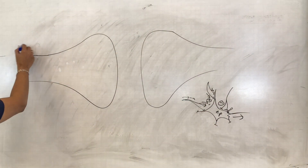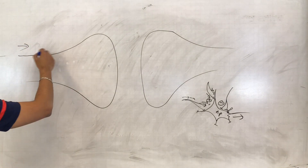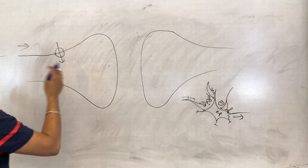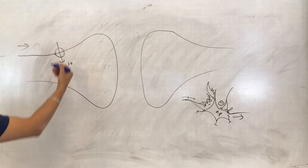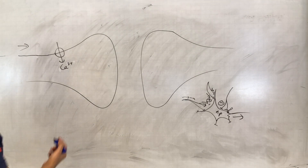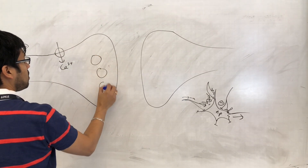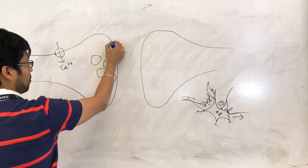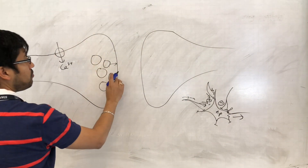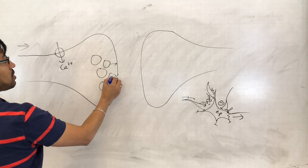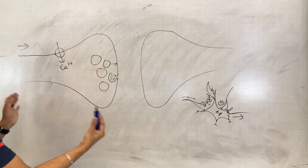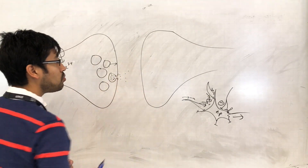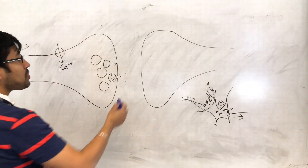Basic synapse: action potential arrives. Depolarization causes voltage-gated calcium channels to open. Calcium ions move into the axon. This causes the synaptic vesicles to move towards the pre-synaptic membrane, fuse with the pre-synaptic membrane, and the neurotransmitter contained within the vesicles diffuses into the synaptic cleft and towards the post-synaptic membrane.